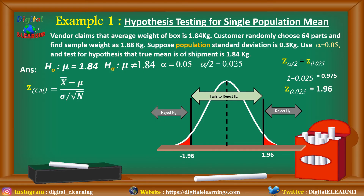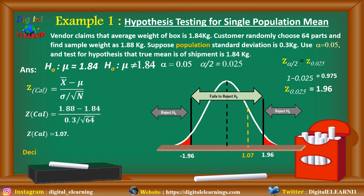Now we calculate the Z calculated value. Using the formula: X bar minus mu divided by sigma divided by square root of n, that is 1.88 minus 1.84 divided by 0.3 divided by square root of 64, we get Z calculated as 1.07. This falls between minus 1.96 and 1.96, so we fail to reject the null hypothesis. There is insufficient evidence to conclude that the true mean weight of the shipment is not 1.84 kg.